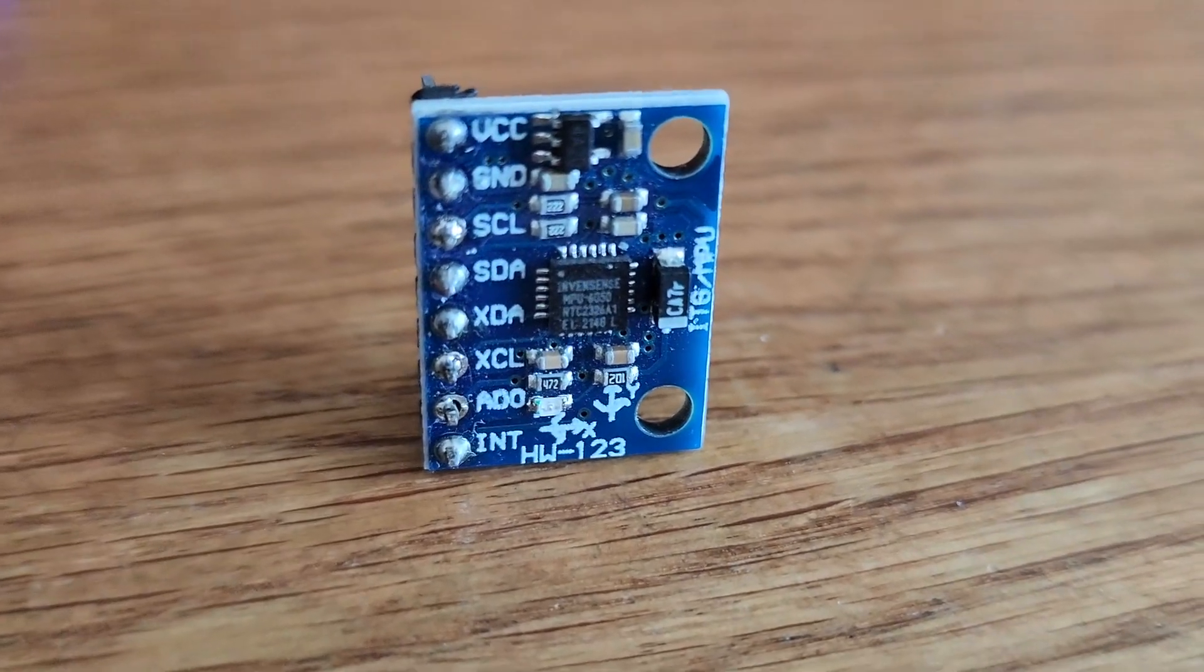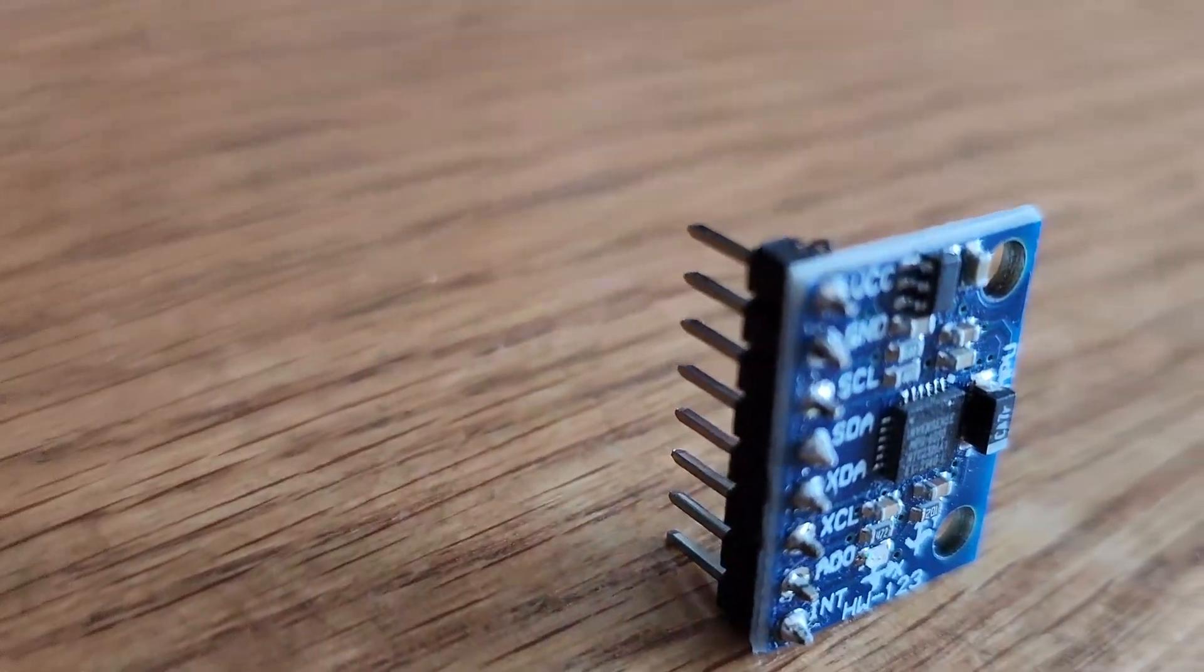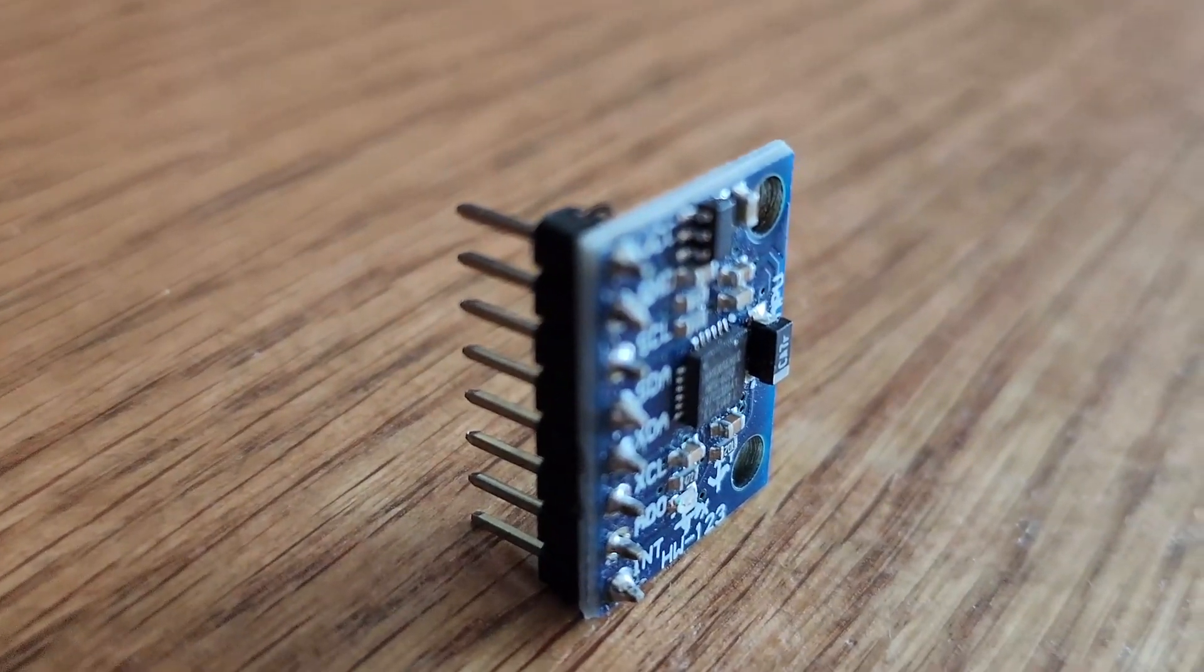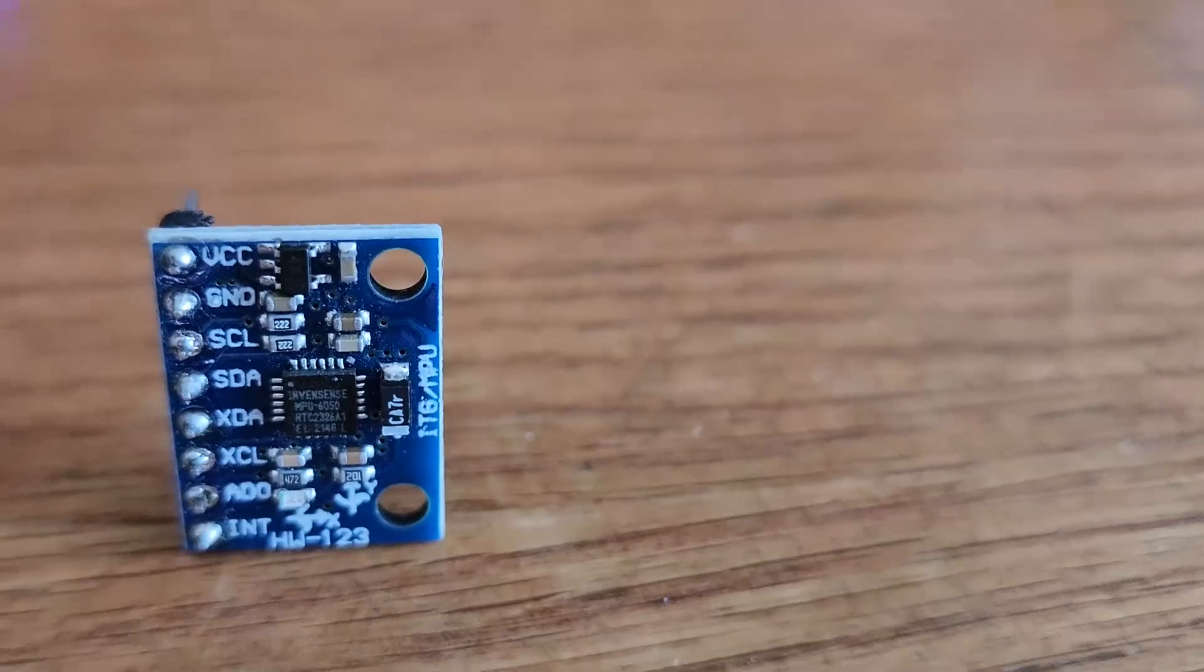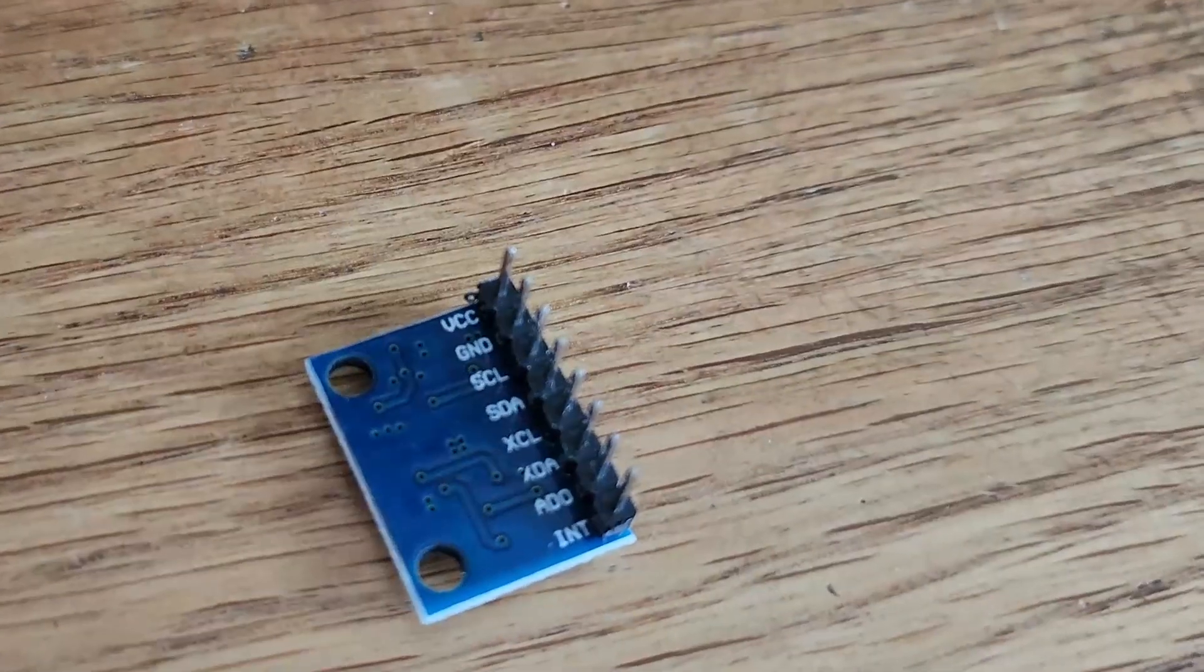Next we'll be using the MPU6050 sensor which is a popular and versatile motion tracking device that combines a 3-axis gyroscope and a 3-axis accelerometer. It's widely used in various applications such as robotics and gesture control.